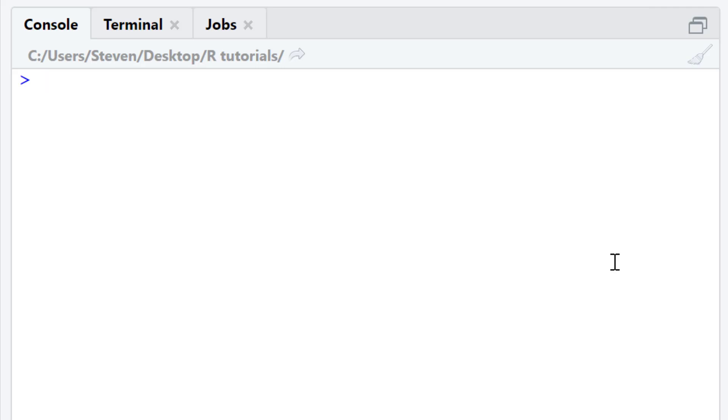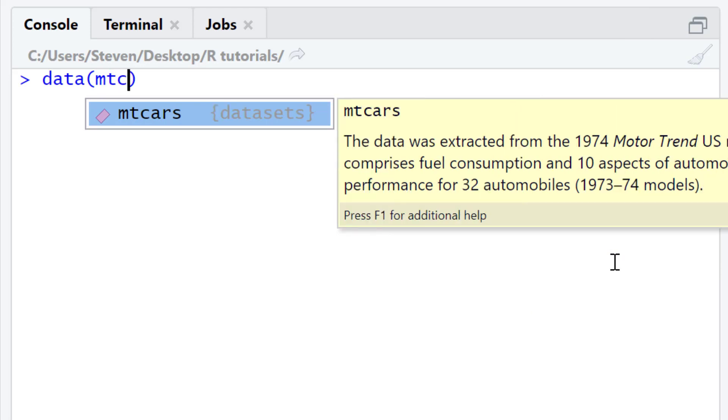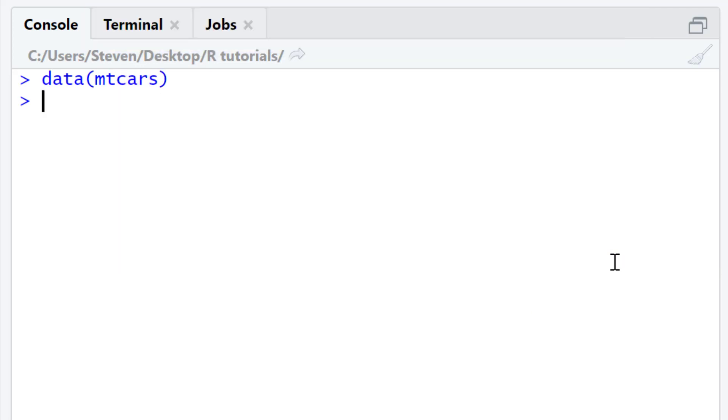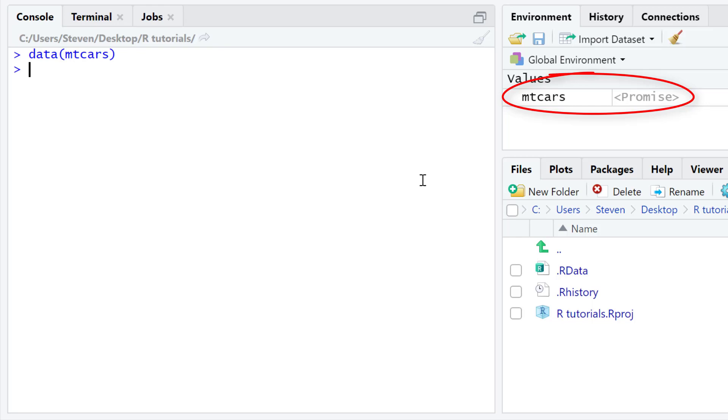To load the mtcars dataset simply run the following code: data, open bracket, mtcars, and then press the return key. You'll now see that the mtcars dataset is available within the environment.